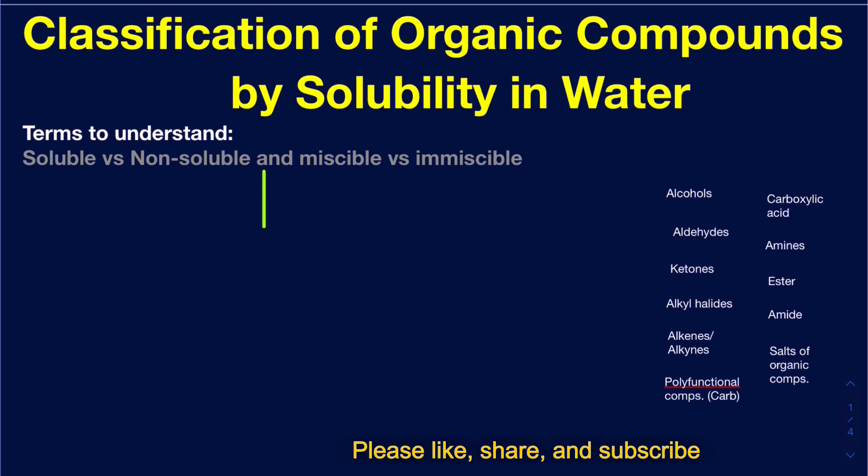That's the first thing you want to be testing, and it applies if you're testing an organic compound that is solid in nature. But what if you're dealing with an organic compound that is already a liquid at room temperature? Then you don't really call it soluble versus non-soluble — rather, you use the terms miscible and immiscible.